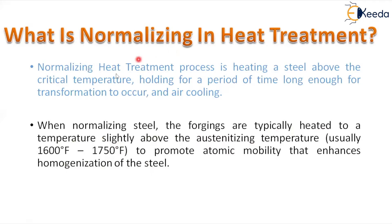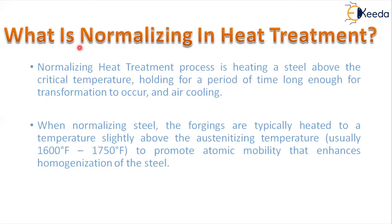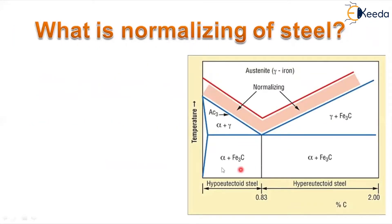The material is kept at this temperature for a particular period of time. Usually the temperature range is around 1600°F to 1750°F for this normalizing heat treatment. In the iron-carbon diagram, the range of hypoeutectoid steel is 0 to 0.83% carbon, and hypereutectoid steel is 0.83 to 2% carbon.